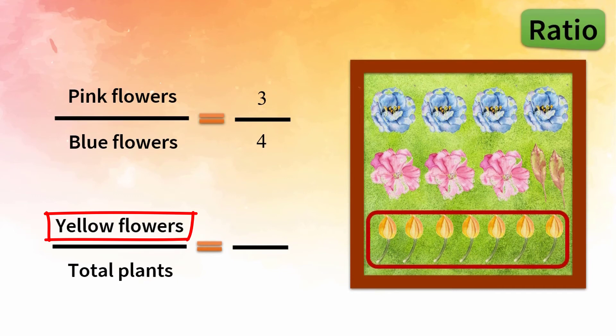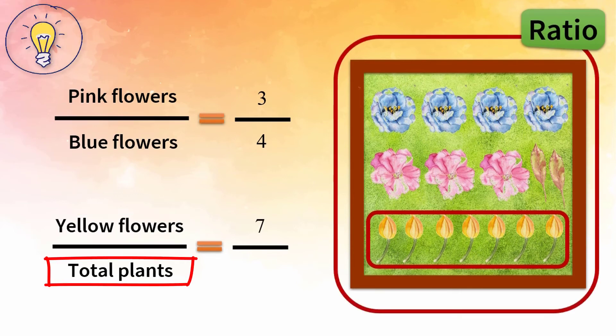Then we count all plants one by one and find there are 16 plants totally, and write 16 down in front of the total plants. So the ratio of yellow flowers to total plants is 7 to 16.